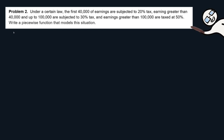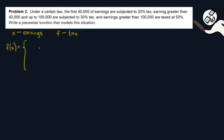In this problem, we will let x be our earnings. We will use the piecewise function to know our tax for certain earnings. So, f(x): the first 40,000 of earnings are subjected to 20% tax, so the first formula is 0.20 times x if our earnings is greater than 0 or less than or equal to 40,000. This is our first formula.